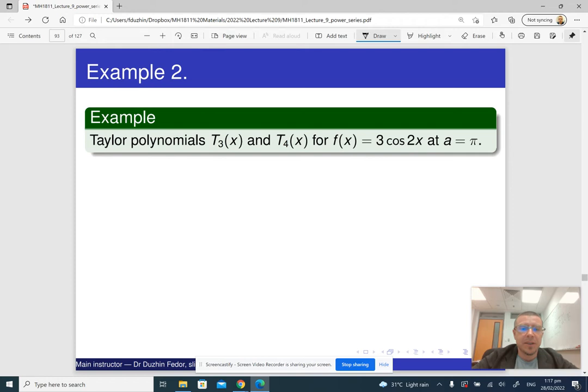So here is an example. How do we find Taylor polynomials of degree 3 and 4 for the given function? Basically, what we need to do, we need to find derivatives of consecutive orders of the given function.